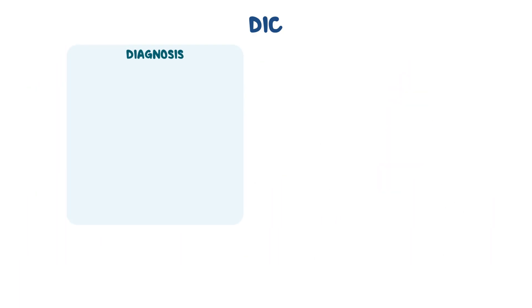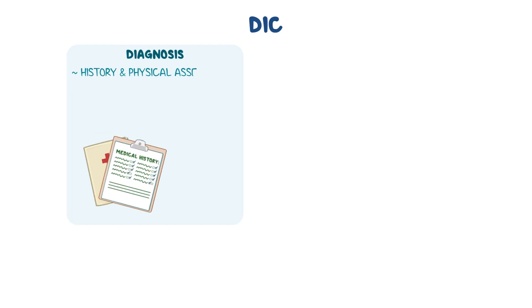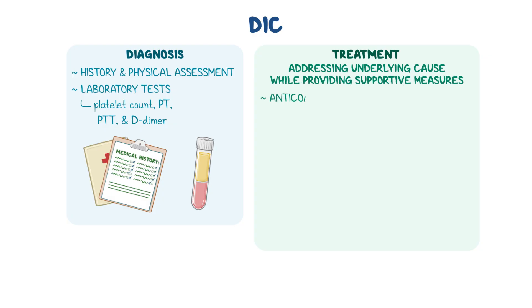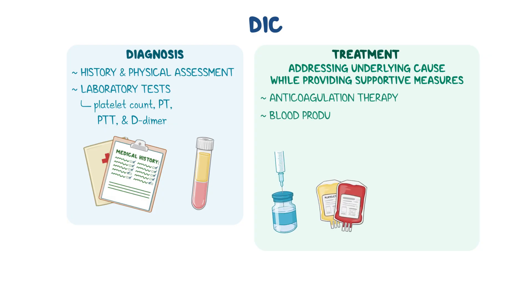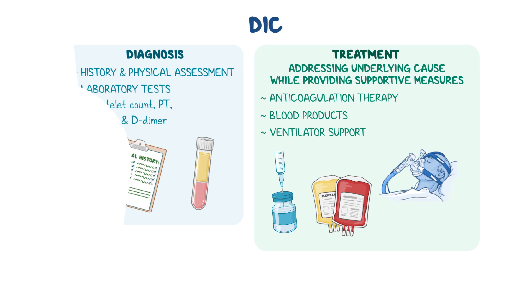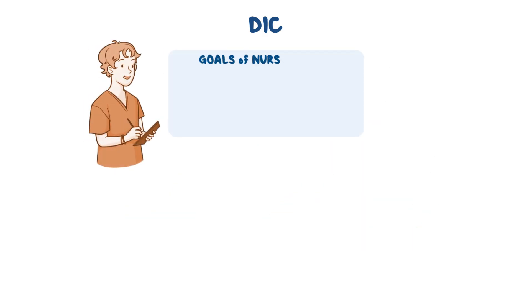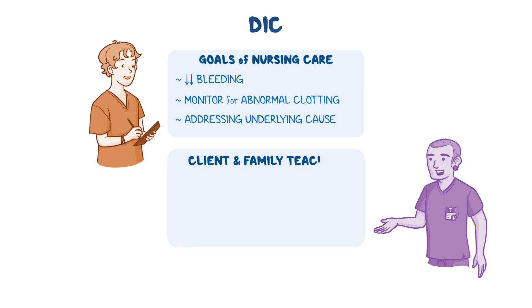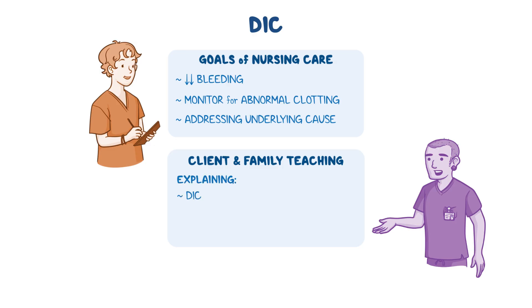Diagnosis of DIC involves the client's history and physical assessment, as well as laboratory tests, including platelet count, PT, PTT, and D-dimer. Treatment focuses on addressing the underlying cause while providing supportive measures, anticoagulation therapy, blood products, and ventilator support if needed. Goals of nursing care include decreasing bleeding, monitoring for abnormal clotting, and addressing the underlying cause. Client and family teaching includes explaining DIC, the plan of care, and the need for continued monitoring.